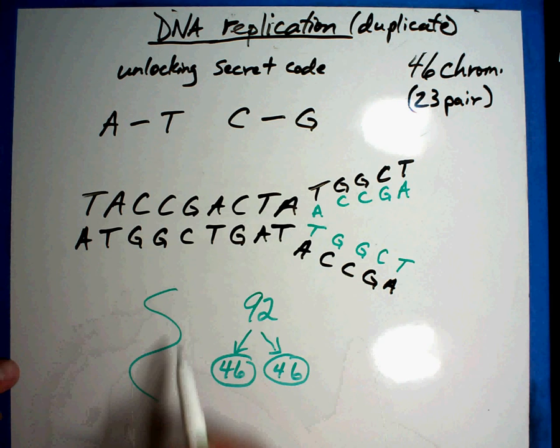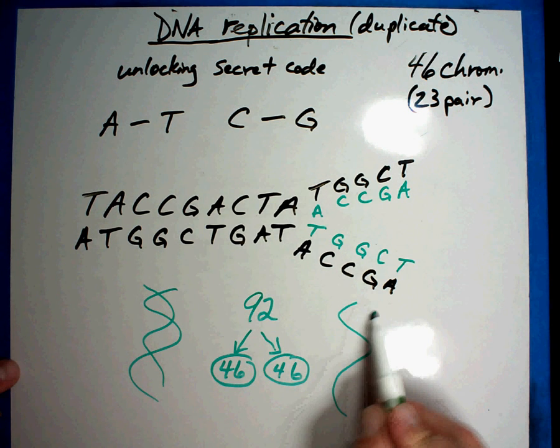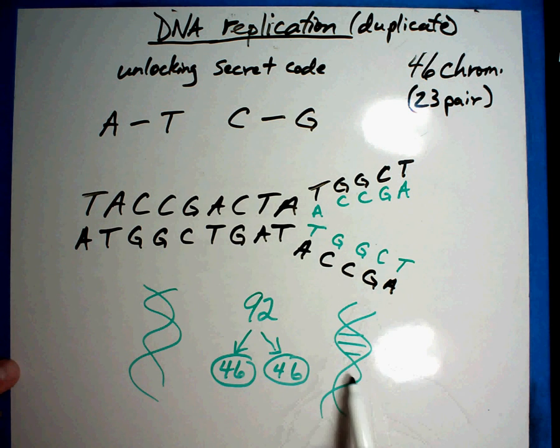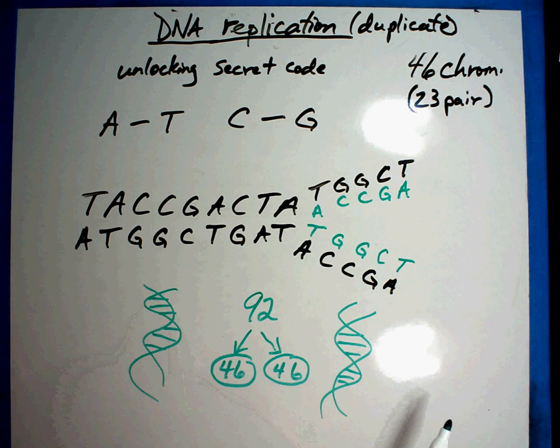So you end up having one set that goes in one cell and you have another set that goes in another cell. And now both cells are identical to each other and they have exactly the same chromosomes. This is how you duplicate your cells and the DNA that's in them.